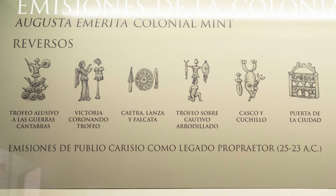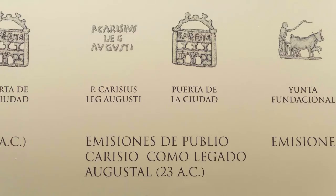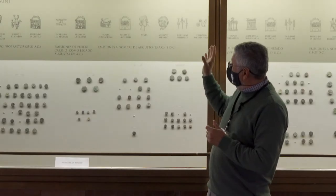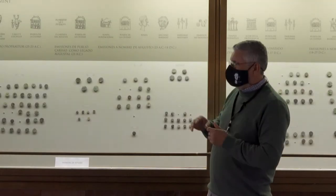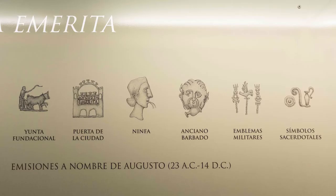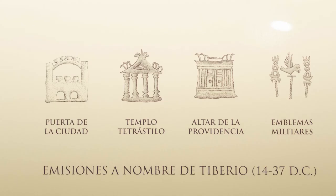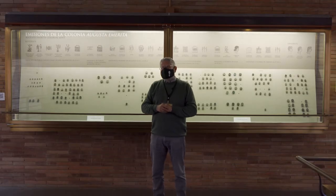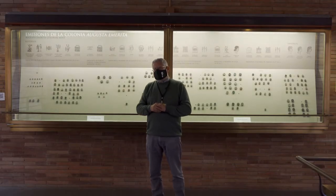Una son las que acuña Publio Caricio, con motivo de las guerras cántabras para pagar a las tropas. La segunda es la que abarca el periodo de Augusto, y la tercera etapa es la que abarca todo el periodo tiberiano. Cada una tiene sus características muy determinadas.